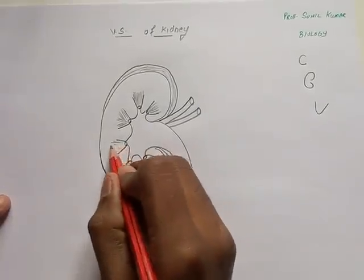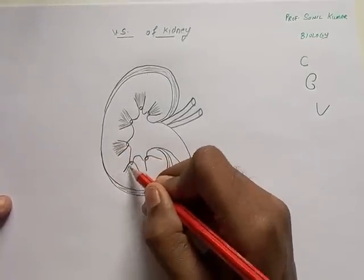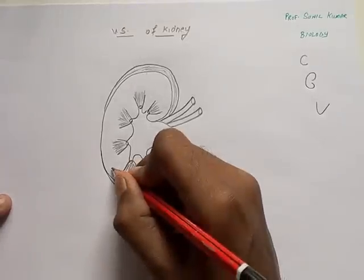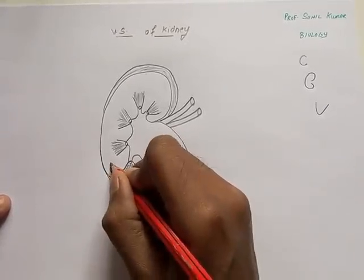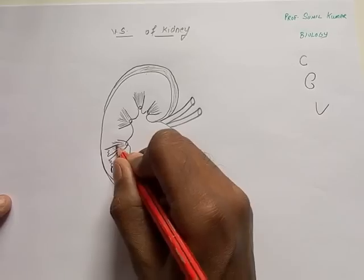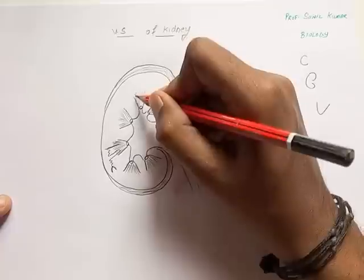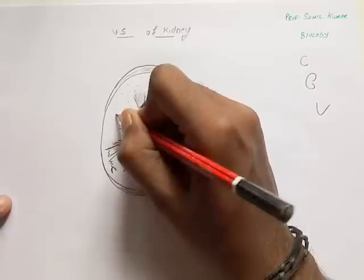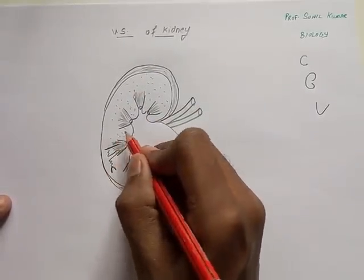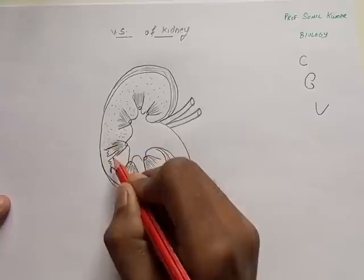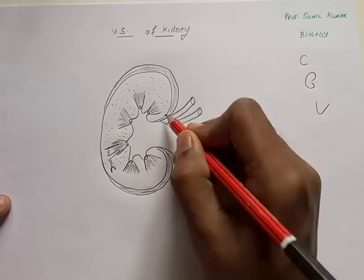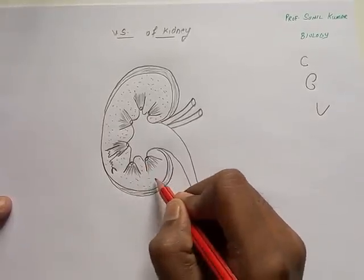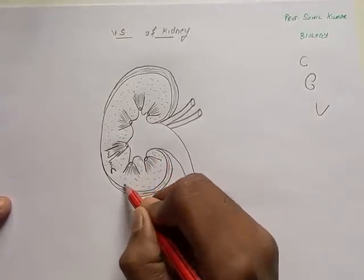This line indicates the collecting tubule present in the nephron. We need to show a nephron here. Draw a line, a loop of Henle, and the collecting tubule. Then put dots — these dots represent the renal cortex. Each dot resembles a nephron. There are 1.2 million nephrons present in each kidney, so we are millionaires in terms of nephrons!